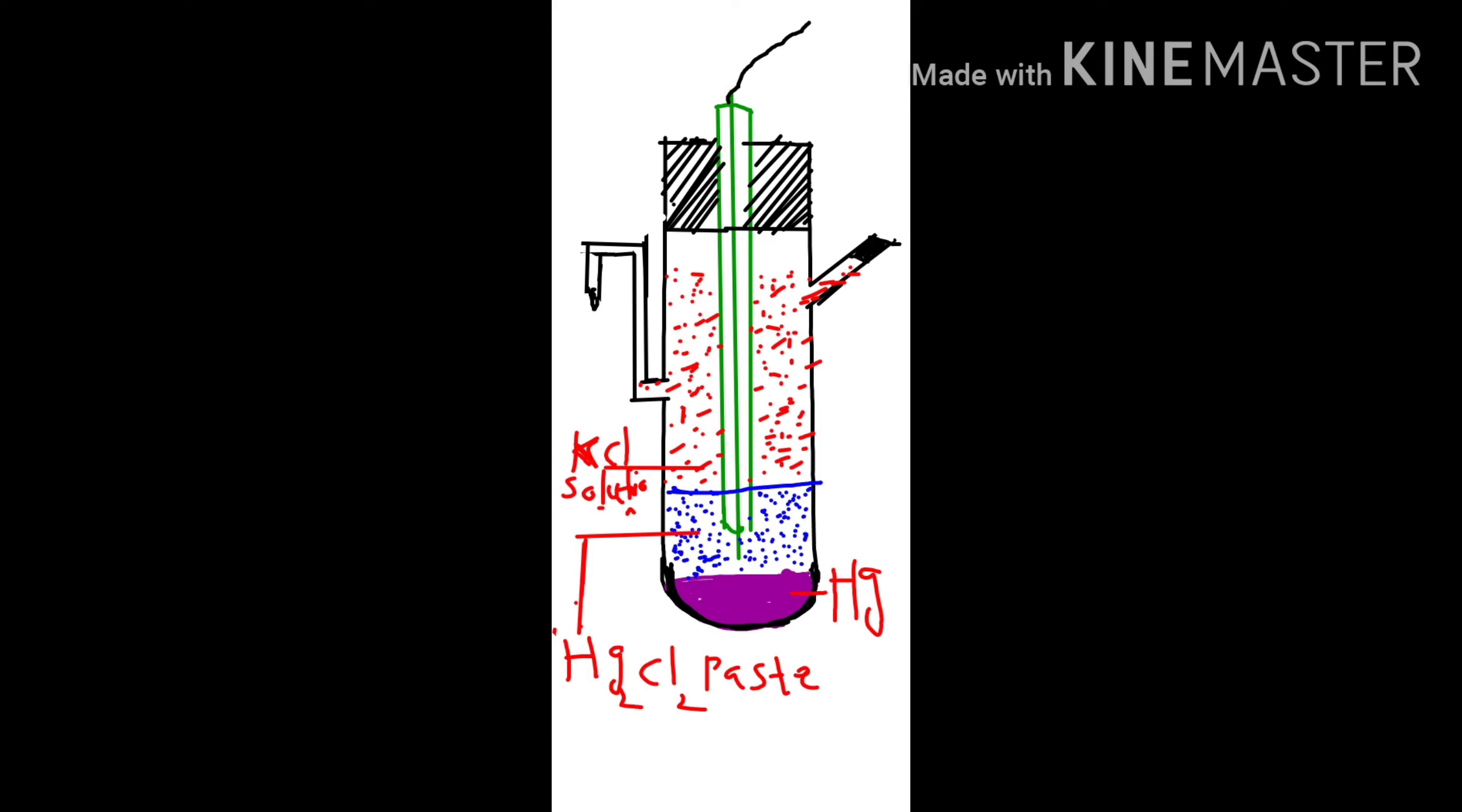Calomel electrode also contains a platinum wire which is sealed in a glass tube. This platinum wire is kept in contact with the mercury at the bottom of the glass tube.